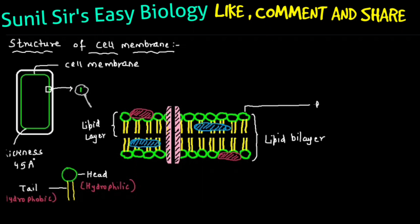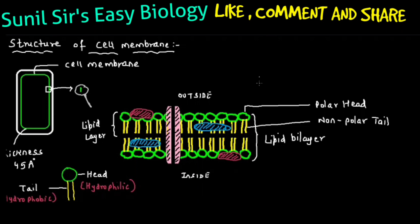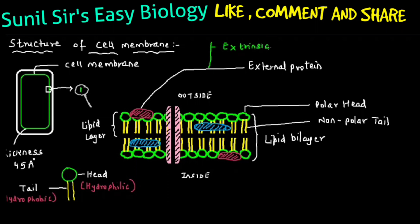The head is polar and the tail is non-polar. Now regarding proteins: the outside of the plasma membrane and the inner part are distinct regions. The red-colored protein is called external protein, also called extrinsic protein. These proteins are very loosely bound — they are not tightly attached — and since they are loosely bound they can be easily removed. External proteins are also known as peripheral proteins.